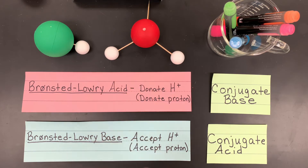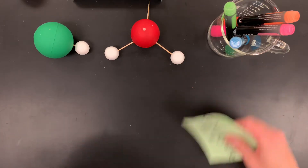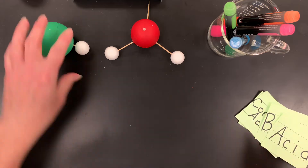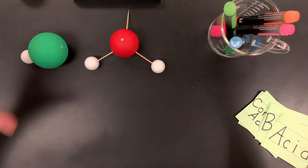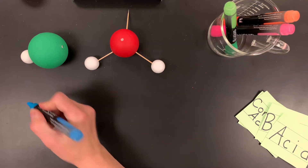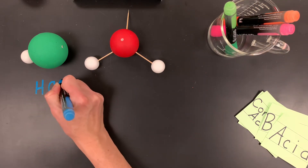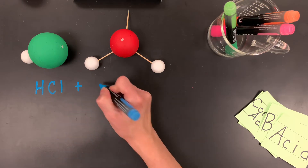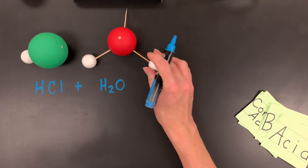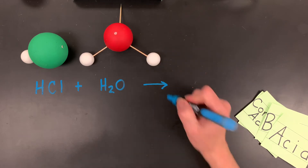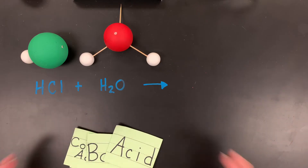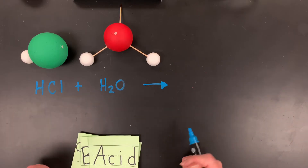Let's get started with our first of the five examples. So here are two substances: HCl and water, H2O. HCl is a strong acid, so it dissociates completely at 100%. In a separate video I'll go over strong acids and bases and how to calculate their pH.